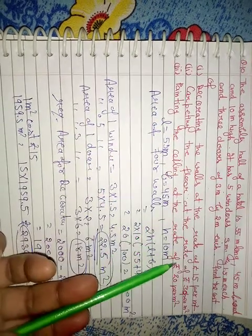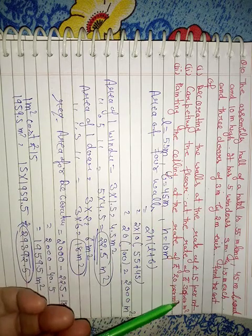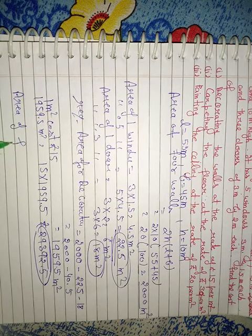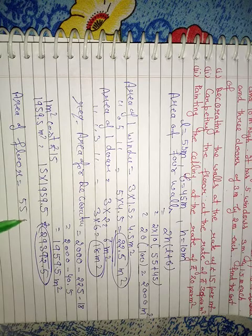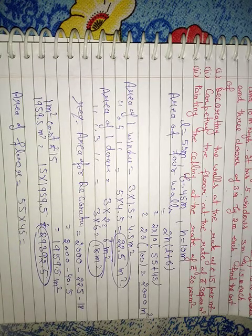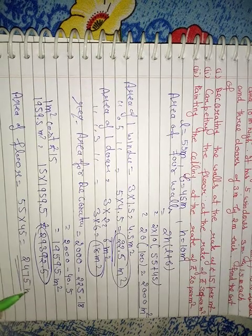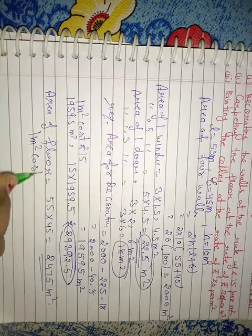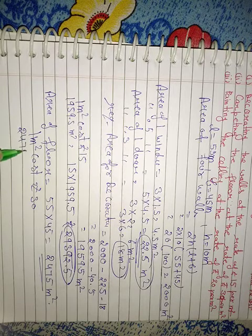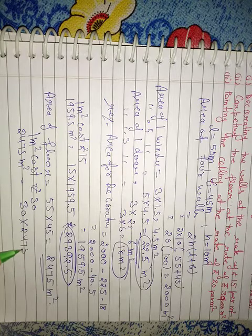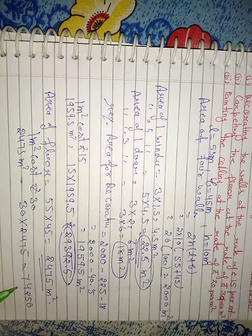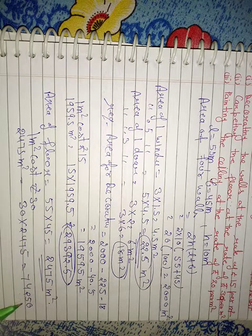For carpeting the floor: area of floor equals length into breadth equals fifty five into forty five equals two thousand four hundred seventy five square meter. Cost of carpeting at thirty rupees per square meter equals thirty multiply two thousand four hundred seventy five equals seventy four thousand two hundred fifty rupees.